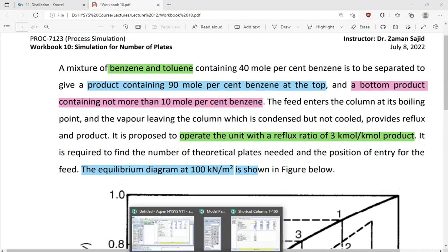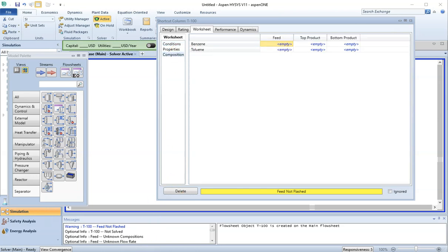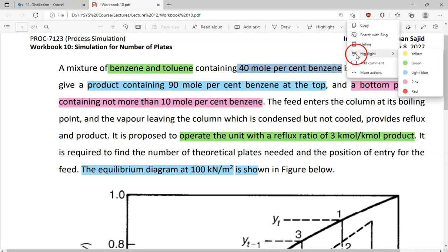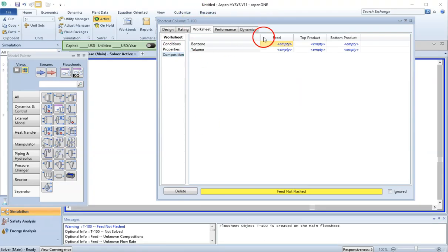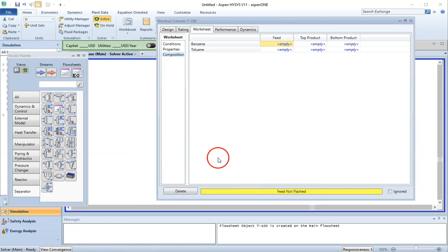We are done with all the input data. Now we should be able to get our results here, but we need to provide the composition as well. Benzene is 40 percent, so my other component, which is toluene, will be 60 percent. I go to my composition in the feed: my benzene is 0.4 and my toluene is 0.6. Then you press OK here.